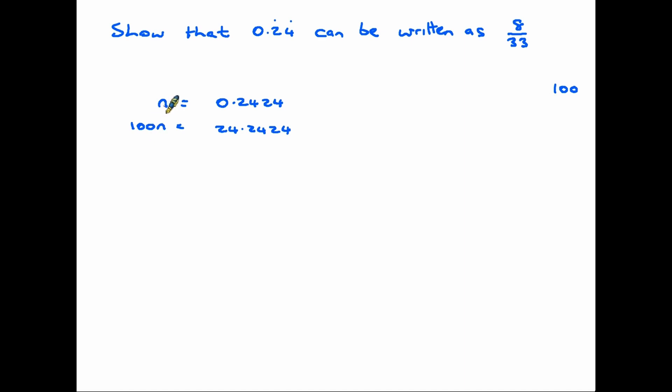The trick now is to find the value of 99n. So we're going to take the 100n and take away the n. So 99n will be 24.2424 minus 0.2424. And if we take that away, it all cancels itself out and we end up as 99n equals 24. Juggle that around slightly means that n equals 24 over 99. And again, if we simplify that down, the top and the bottom both divide by 3 and we get 8 over 33. And that's what we've been asked to prove. So that's your answer.